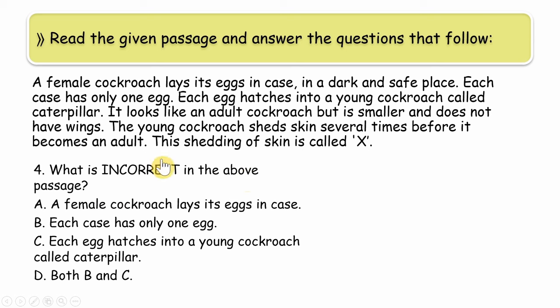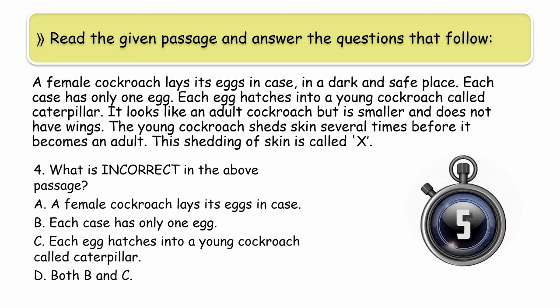Now this is a passage, a case study is given. From this we need to identify what is incorrect. What is incorrect in the above passage? Some things are incorrect. The first option is: A female cockroach lays its eggs in a case - is this wrong? Or each case has only one egg? Or each egg hatches into young cockroach called caterpillar - is this wrong? Or both B and C are wrong? So from A, B, C, and D, we need to choose the correct answer. Your time starts now.